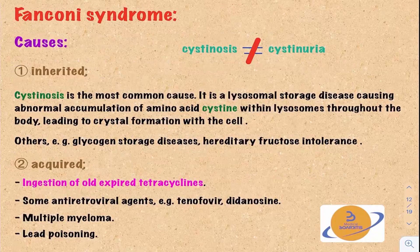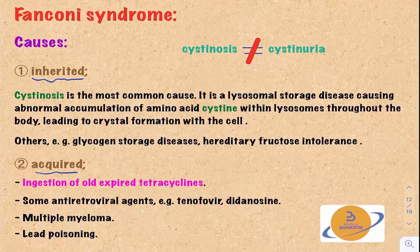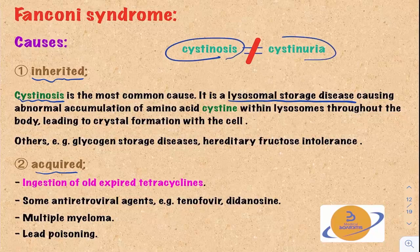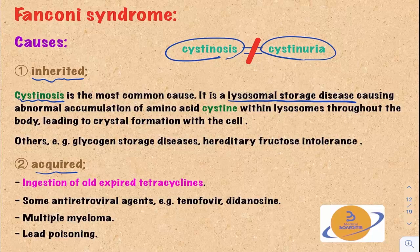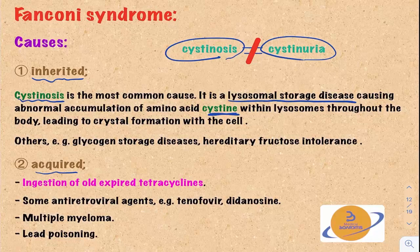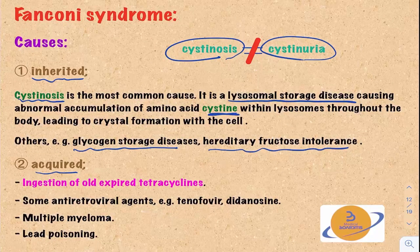The causes of Fanconi syndrome are very high yield for the boards. It can be either inherited or acquired. The most common inherited cause is cystinosis — a lysosomal storage disease. Please don't confuse cystinosis with cystinuria; they are not the same. Cystinosis causes abnormal accumulation of the amino acid cysteine within the lysosomes of cells throughout the body, including the proximal convoluted tubule cells, leading to dysfunction. Other inherited causes include glycogen storage diseases and hereditary fructose intolerance. The common thread is abnormal accumulation of substances within cells, leading to cellular dysfunction.